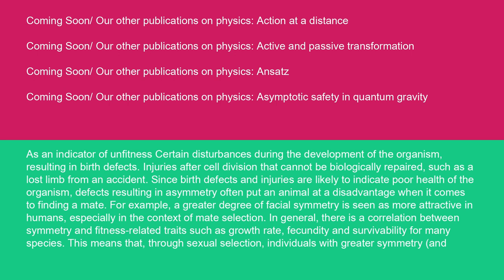As an indicator of unfitness, certain disturbances during the development of the organism resulting in birth defects, injuries after cell division that cannot be biologically repaired, such as a lost limb from an accident. Since birth defects and injuries are likely to indicate poor health of the organism, defects resulting in asymmetry often put an animal at a disadvantage when it comes to finding a mate.